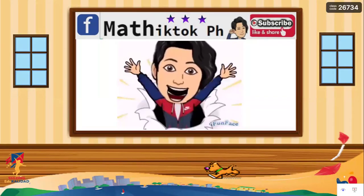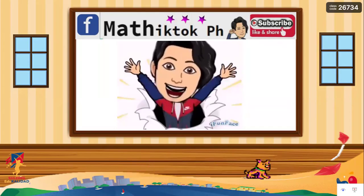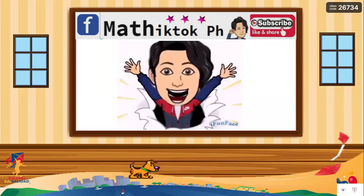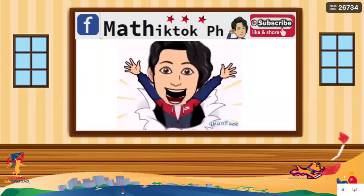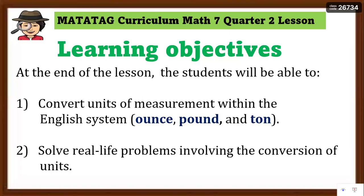Hi, hello students, welcome back to my YouTube channel. Don't forget to subscribe. Our learning objectives: at the end of the lesson, the students will be able to first convert units of measurement within the English system — we have ounce, pound, and ton — and solve real-life problems involving the conversion of units. This is what Grade 7 students need to learn in the K to 12 curriculum for Mathematics Quarter 2.